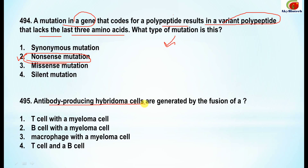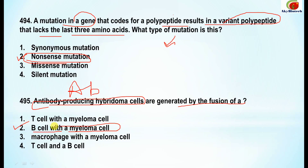Question 495: antibody-producing hybridoma cells are generated by the fusion of a B cell with a myeloma cell.